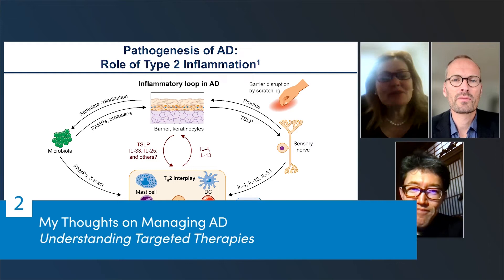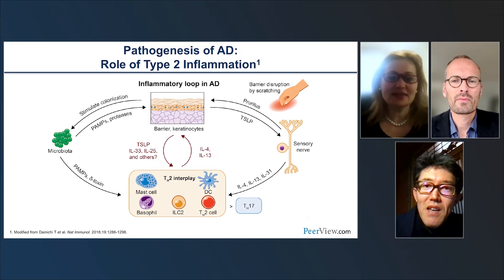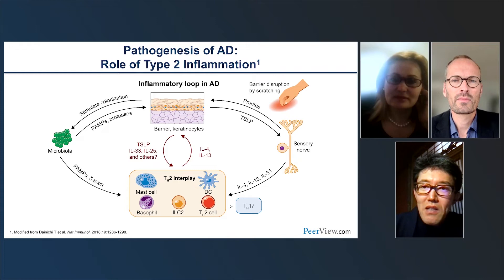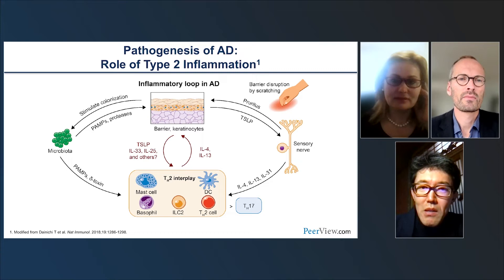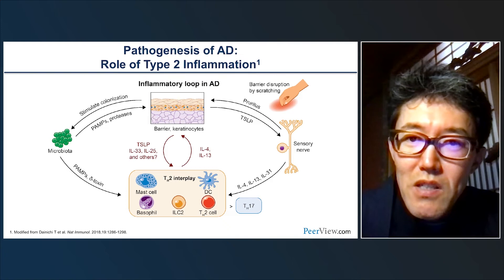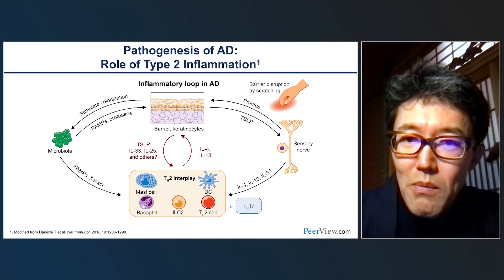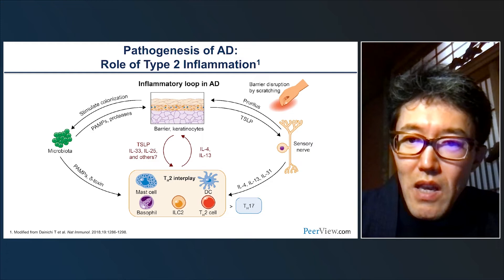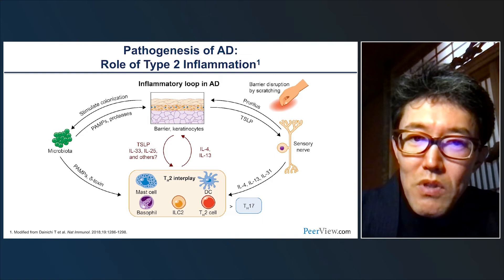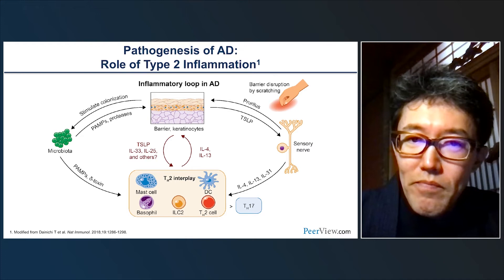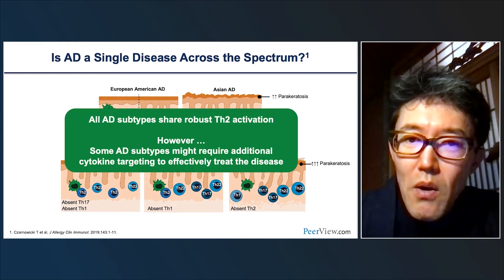I'm Kenji Kabashima from Kyoto University. I'd like to talk about managing AD and understanding targeted therapies, especially in terms of adult and pediatric AD patients. Regarding the pathogenesis of atopic dermatitis, IL-4 and IL-13 play a major role in the development of atopic dermatitis — what we call type 2 inflammation. IL-4 and IL-13 impair barrier function and induce itch, and barrier disruption results in microbiome dysbiosis. All AD subtypes share robust TH2 activation; however, some subtypes may require additional cytokine targeting, such as IL-22 or IL-31, to effectively treat the disease.